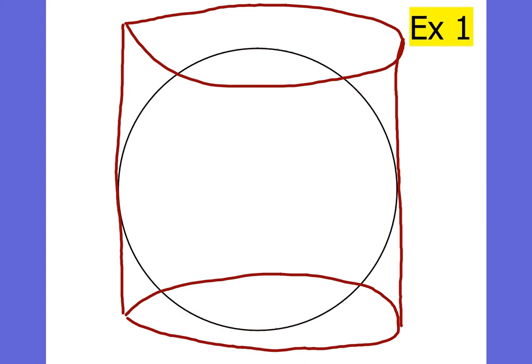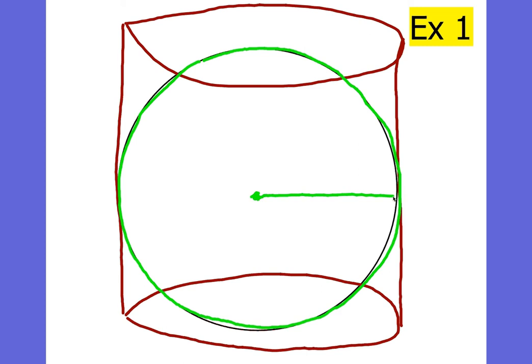When you inscribe something inside of something, it just means you put a shape inside of a shape. Here we have a ball inside of a sphere inside of a cylinder, and the radius of this is 3 inches.